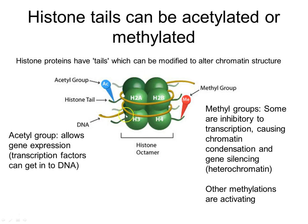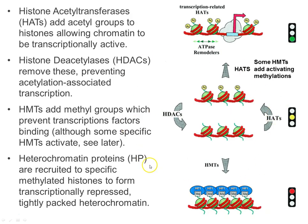DNA is wrapped around histones in about one and three-quarter loops. For DNA to be actively transcribable, an acetyl group — CH2CH3 — is tagged onto the histone N-terminal tails. The N-terminus sticks out past the DNA, and if it's acetylated, the chromatin becomes loose. When histones are methylated instead, the chromatin becomes silent. A complex of enzymes regulates all of this.